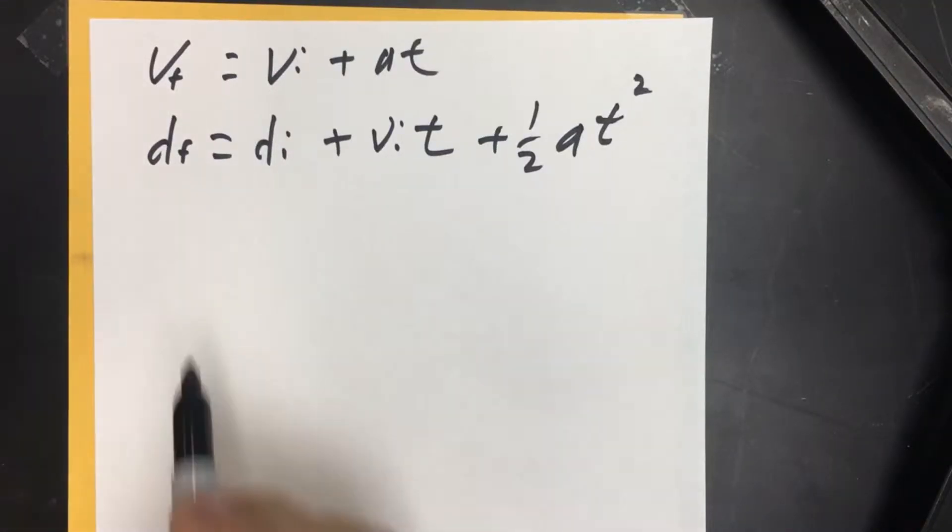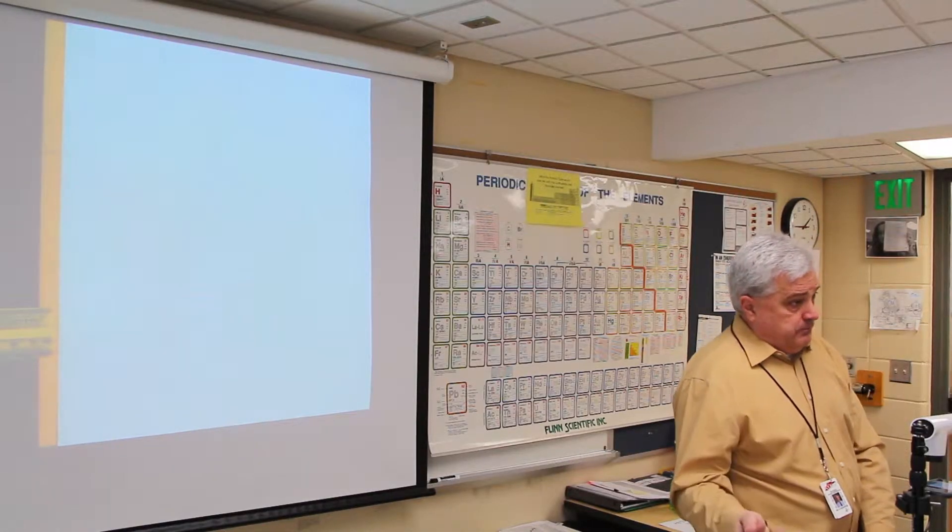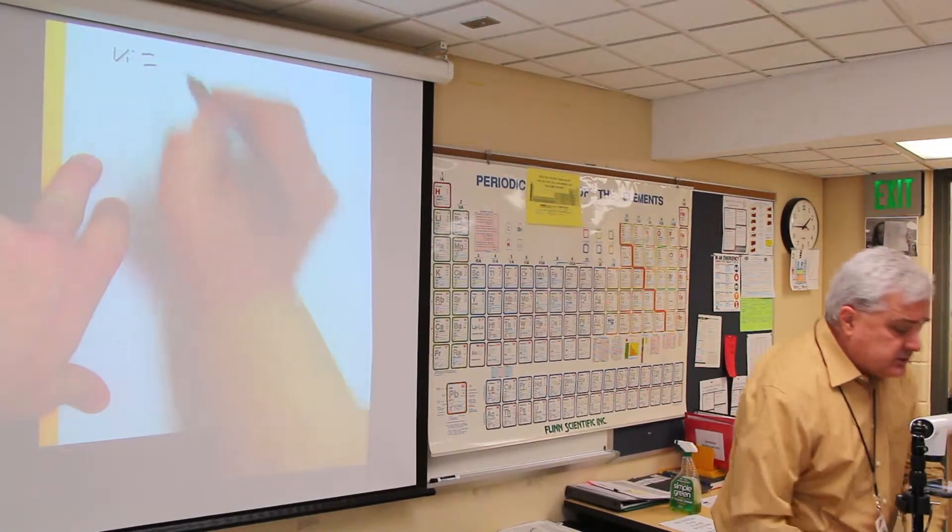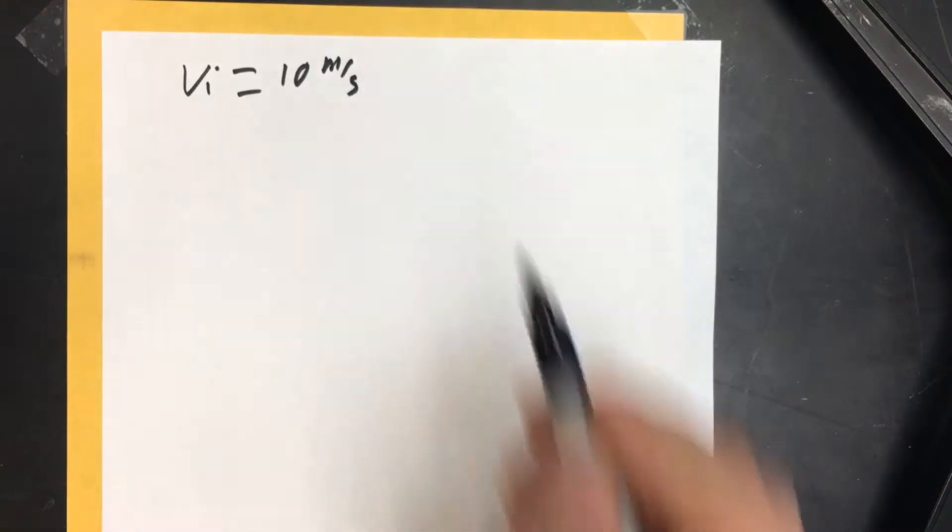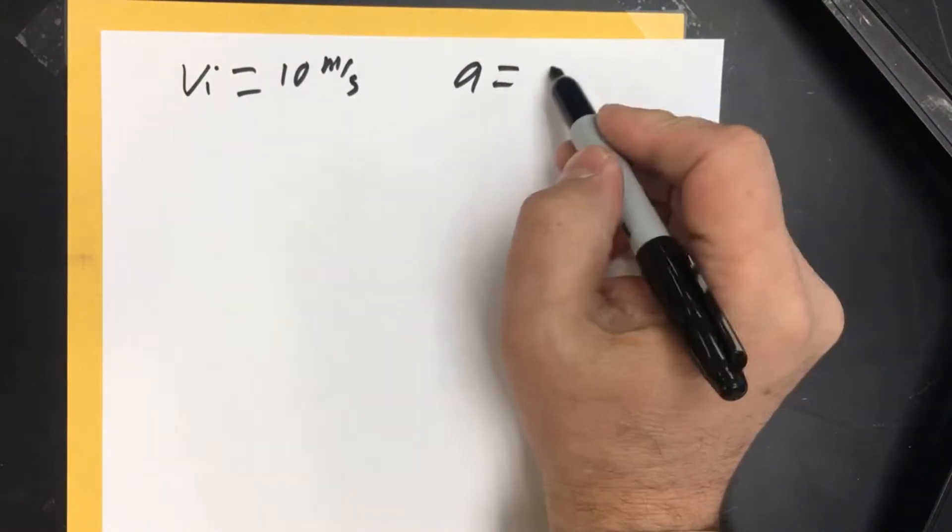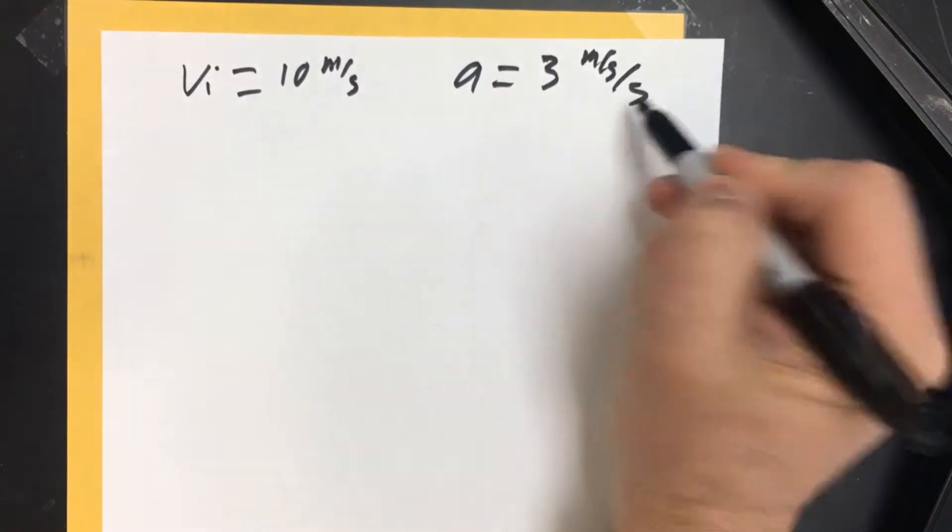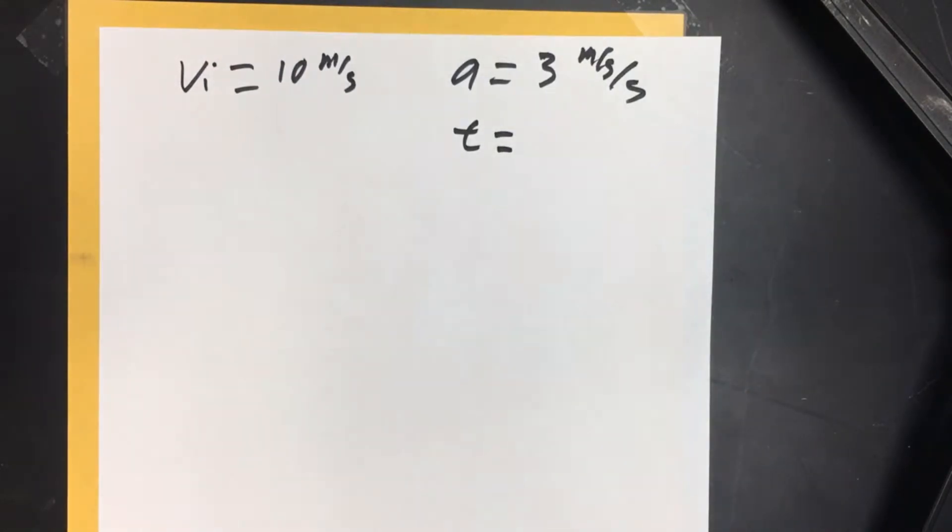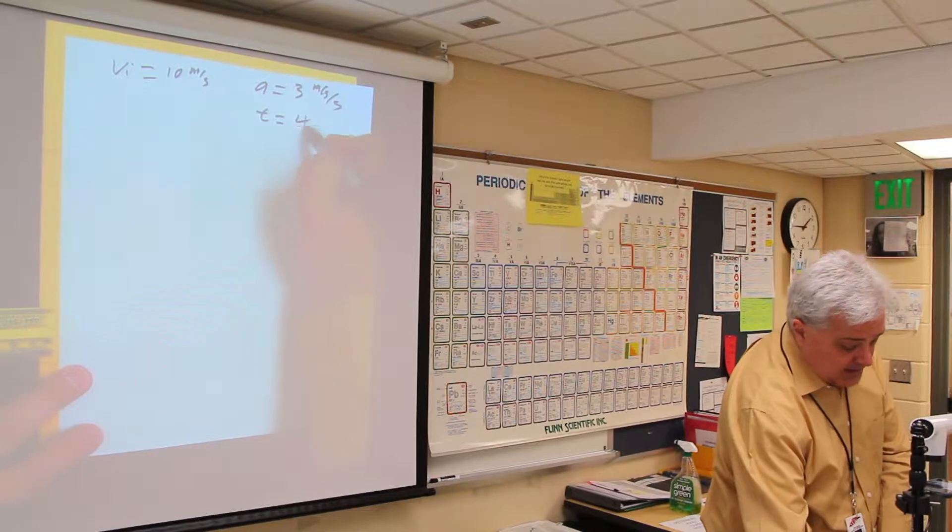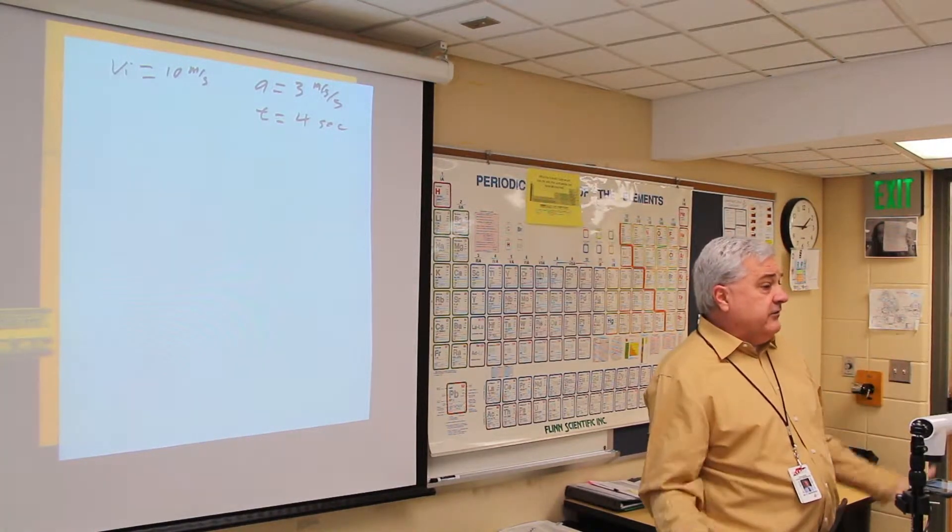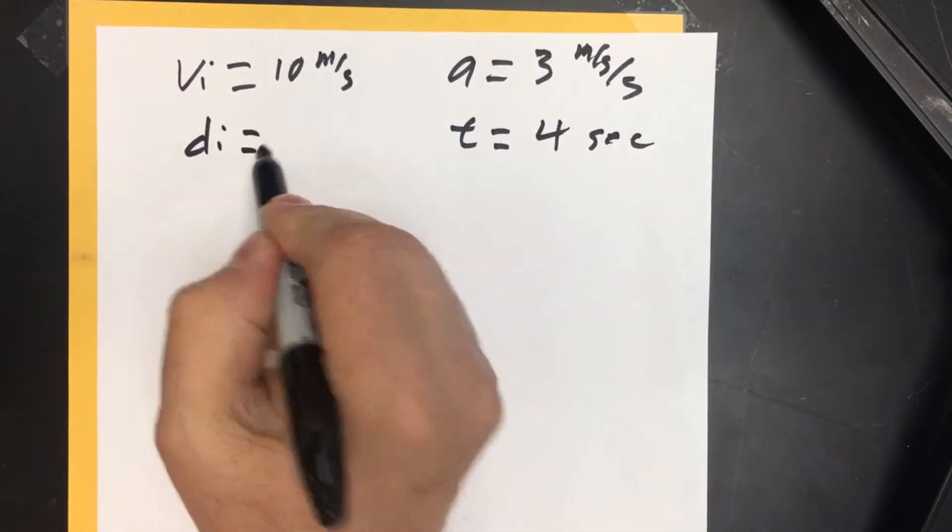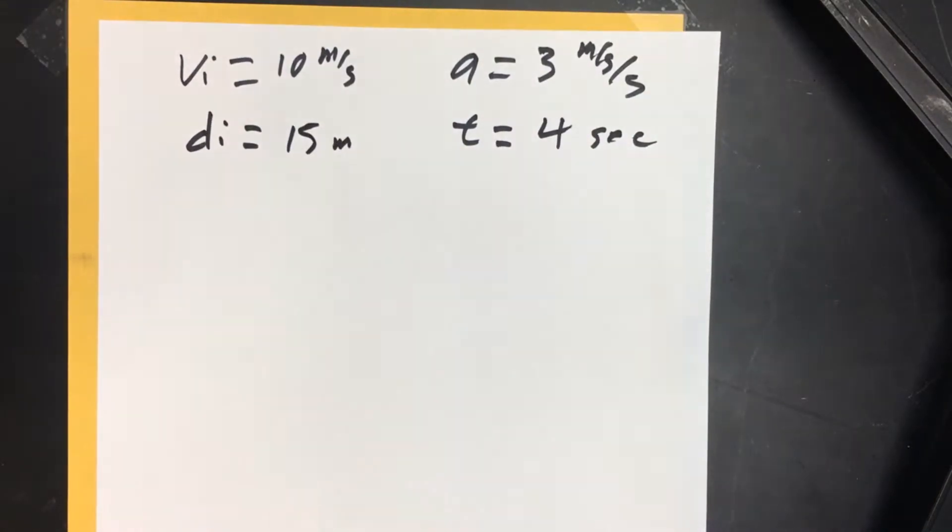These two however you're going to use over and over again. So in this video we're going to do an example problem where we have an object in motion and we are accelerating it. Step one in solving any equation is write down what's given. We're going to say the initial velocity is 10 meters per second, the rate of acceleration is 3 meters per second per second, time is 4 seconds, and the object is initially 15 meters from the reference point.